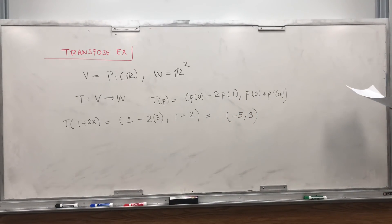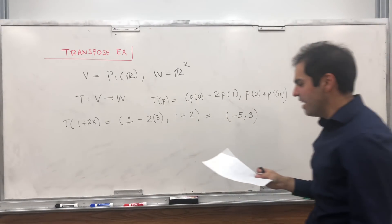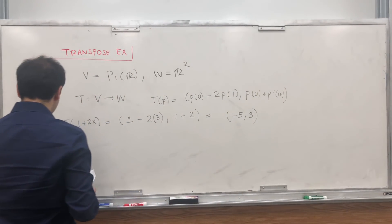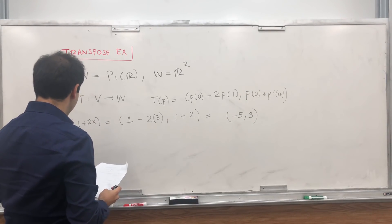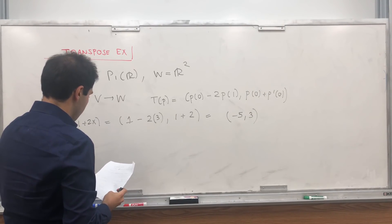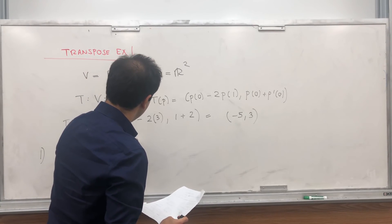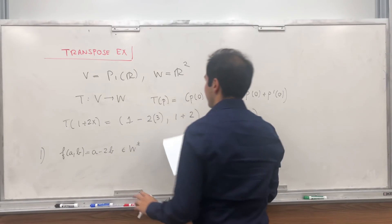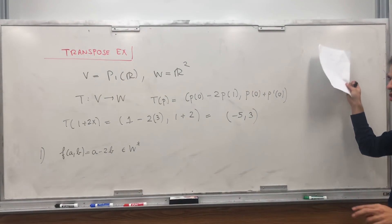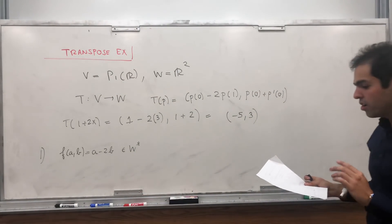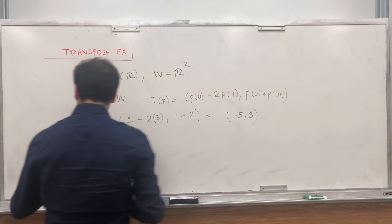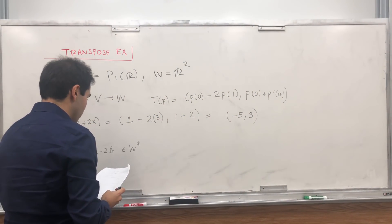So indeed, it's a linear transformation from a polynomial space to R2. The first question is, if F of AB equals A minus 2B, which is a linear functional from R2 to R, so it's in W star, the question is, calculate T transpose of F.